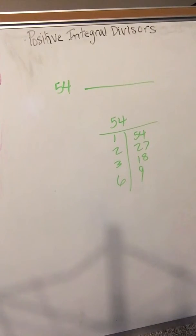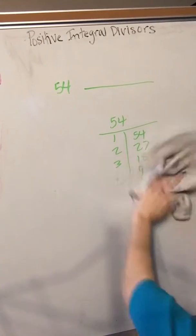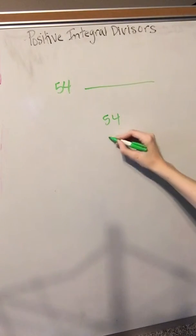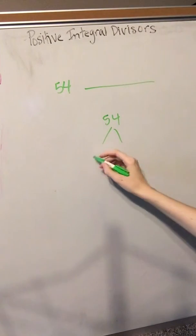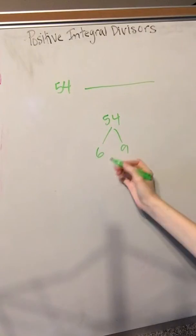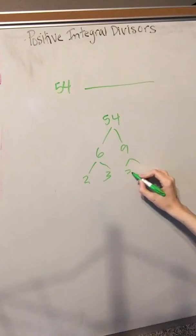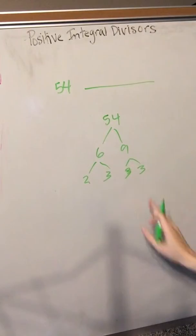But a better way is to do this trick. So what you do is you divide 54 in your head into its prime numbers. So you have 6 times 9, those aren't prime numbers, so you do 2 times 3, and 3 times 3, all prime numbers.